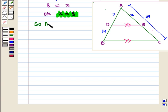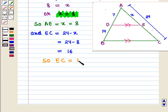So AE, which equals x, is equal to 8. And EC, which equals 24 minus x, will be equal to 24 minus 8, that is 16. So EC equals 16.